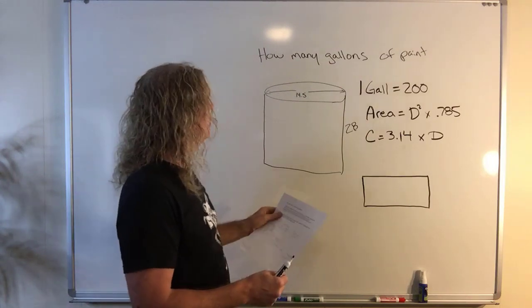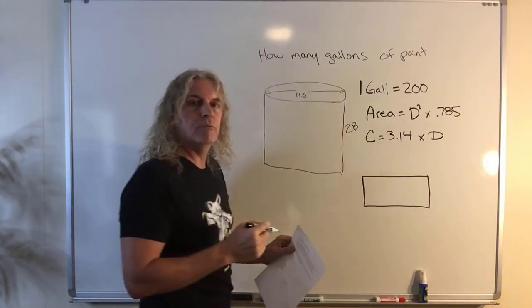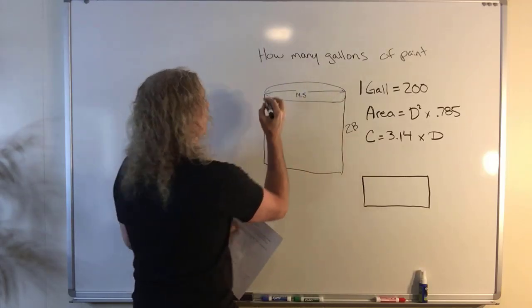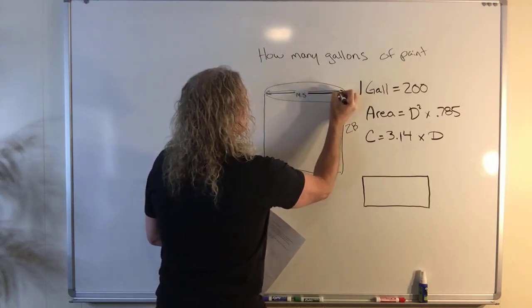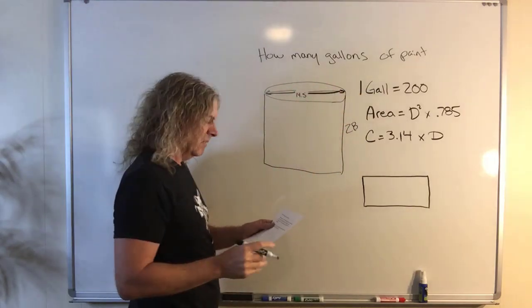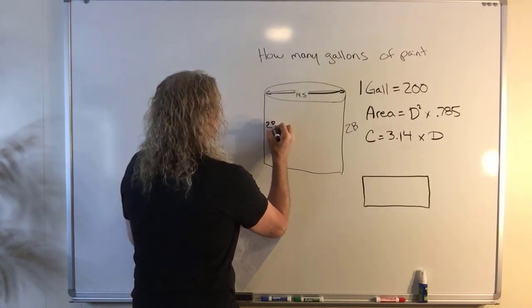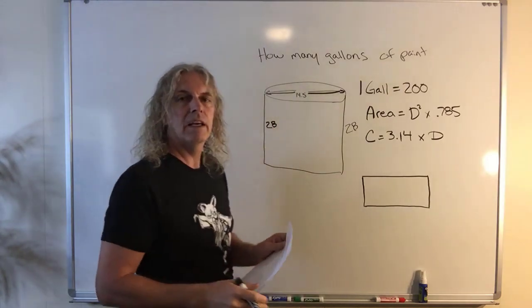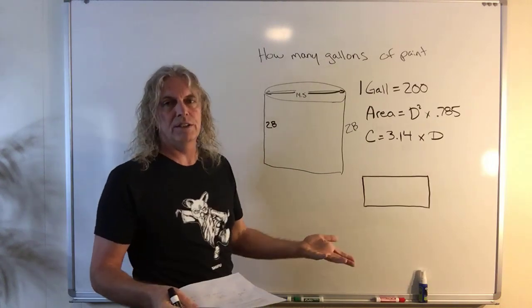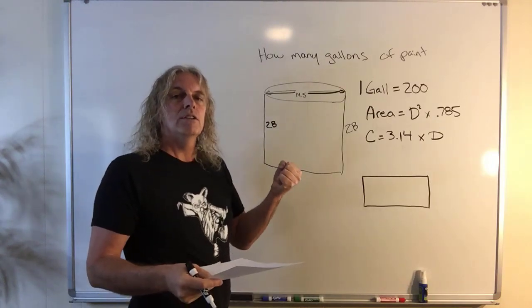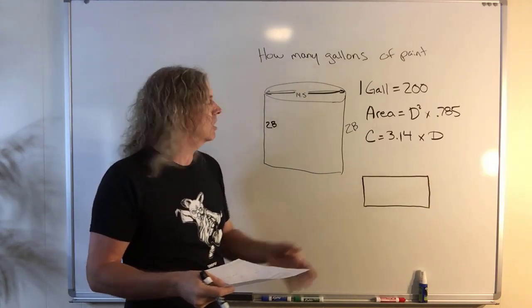What do we know in this problem? We know that the diameter is 14 and a half feet. Remember the diameter is the distance across a circle, so from one side of that tank to the other side is 14 and a half feet. And we know the height of that tank is 28 feet high, from the ground to the top. That's all we need to know to solve the problem other than a couple of constants. You know how I'm always talking about memorize the constants, put them on flashcards, beat them in your head. We're going to use a couple of those here.